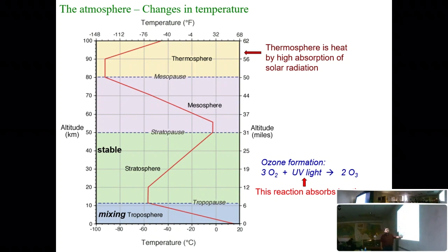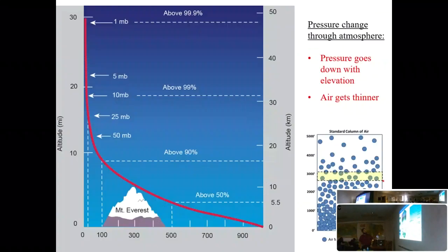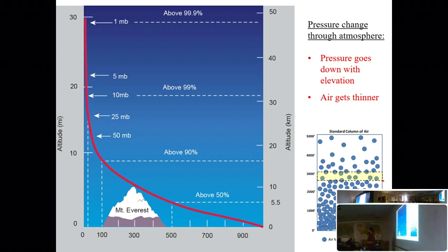Temperature also goes down as you go up through the troposphere — you all know it gets colder when you go up into the mountains. Interestingly, temperature actually rises again once you get past the troposphere into the stratosphere, but we don't need to worry about that. To summarize: as you go up in the atmosphere, density goes down, pressure goes down, and temperature goes down.